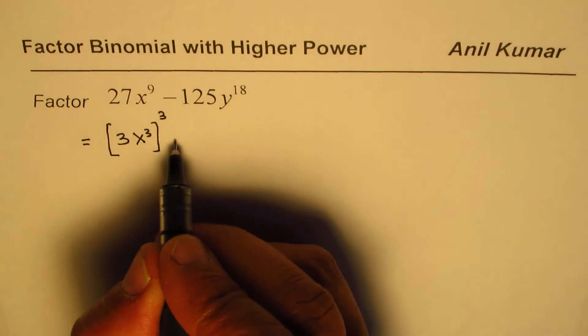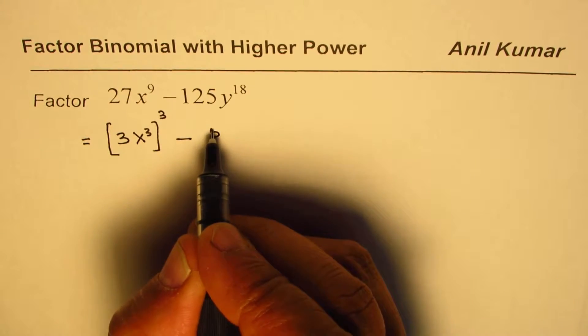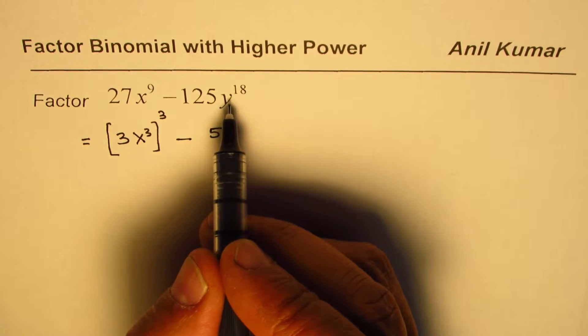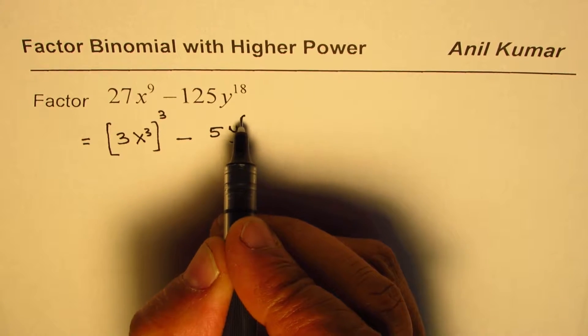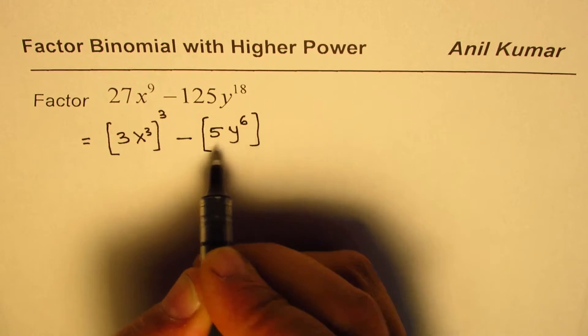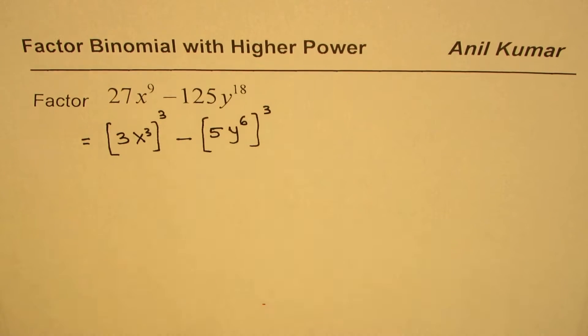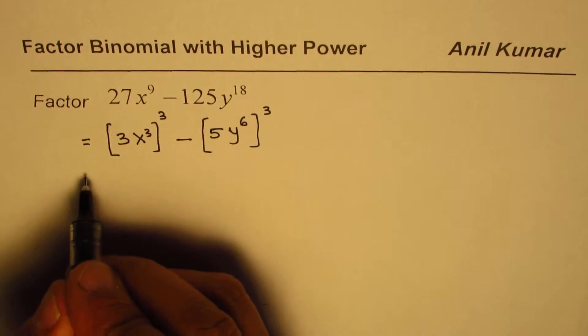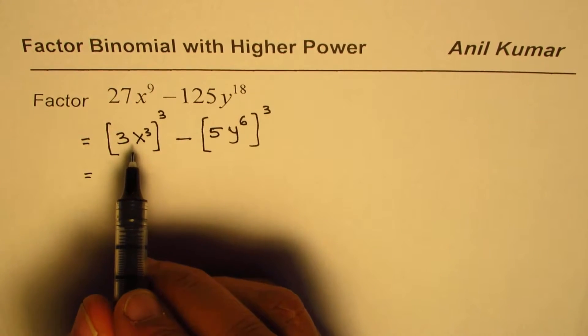Similarly, we can write 125 as 5 cubed and y to the power of 18 as the cube of y to the power of 6. When you multiply 6 by 3 you get 18. So at this stage we get difference of cubes. Now we will apply the formula for difference of cubes, which is a cubed minus b cubed.